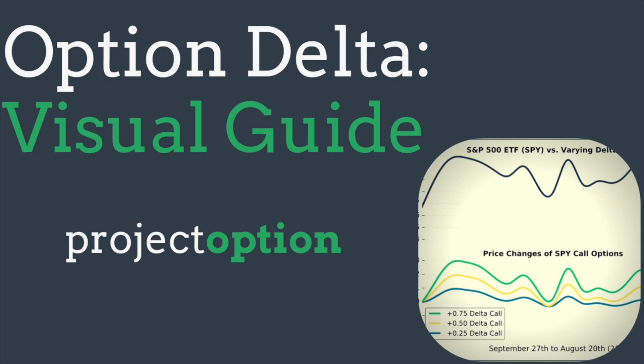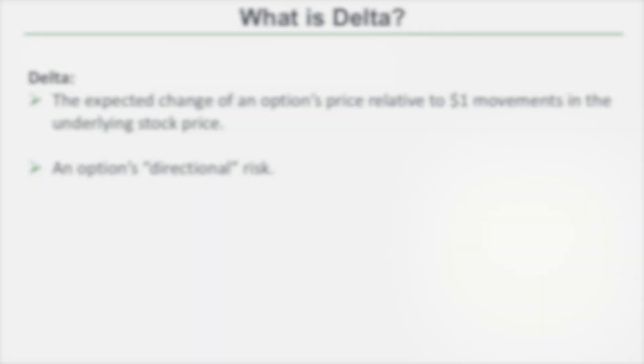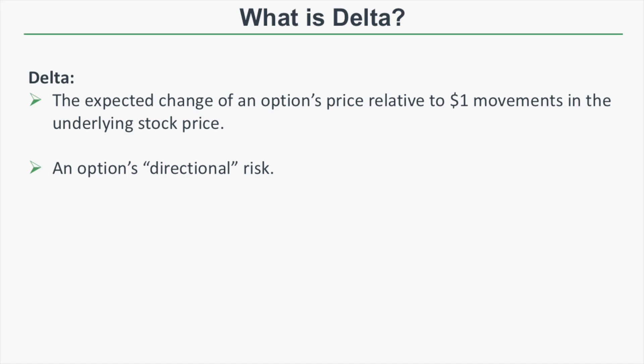What's going on everybody? Chris here from Project Option, and welcome to the first video in the Option Greeks series. The option Greeks are used by options traders to assess the various risks that their positions are exposed to. In this video, we're going to talk about Delta, which is the option Greek that represents an option's directional risk.